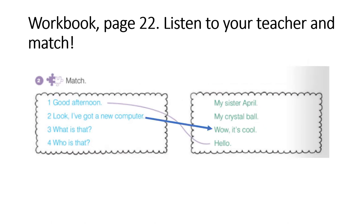Exercise three. What is that? Ponovi sa mnom. What is that? Što je to? My crystal ball. Who is that? My sister April. Ok, check it out. Provjeri. Stop the video.